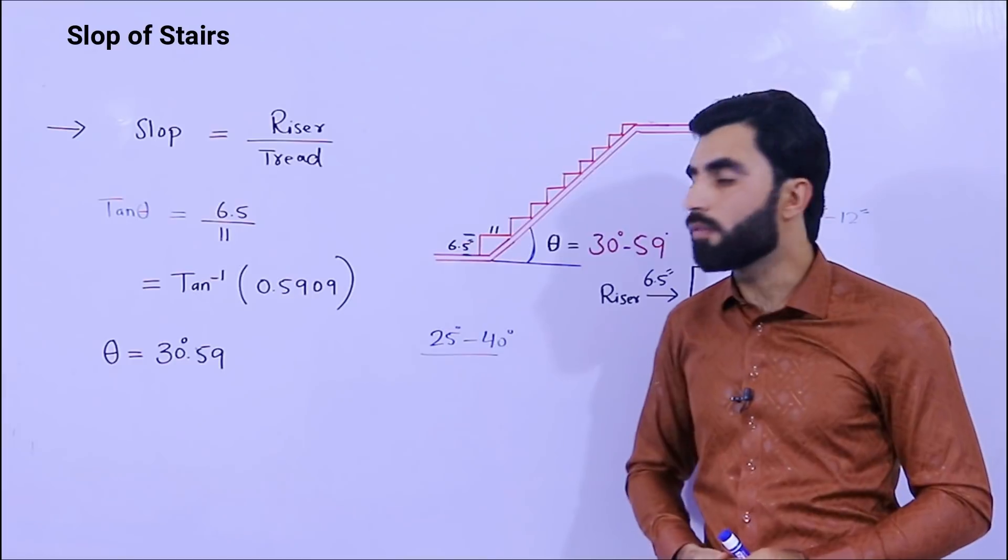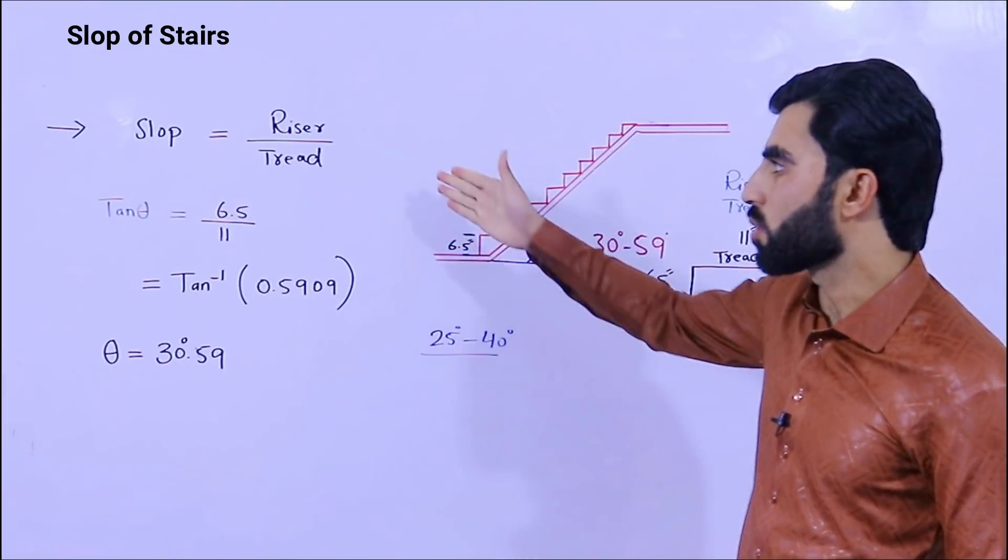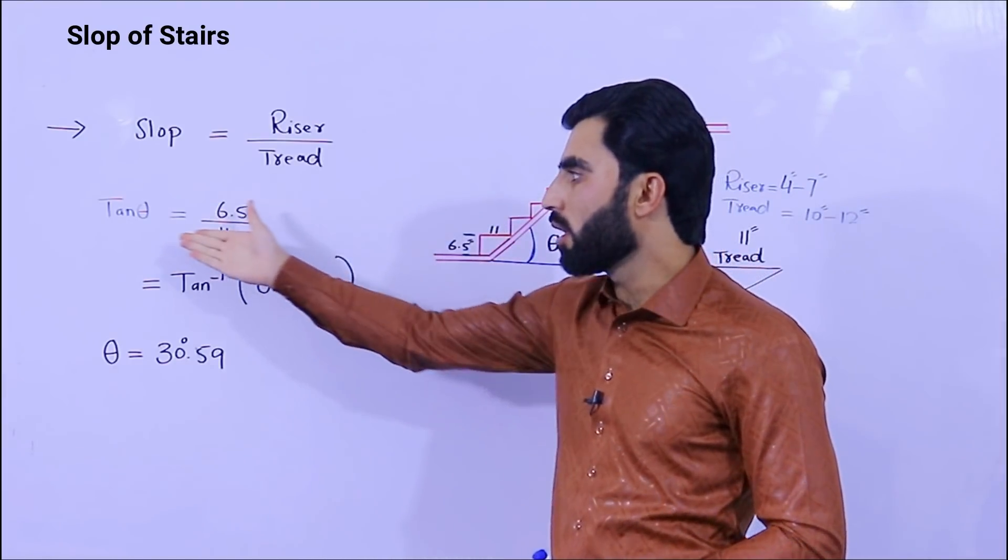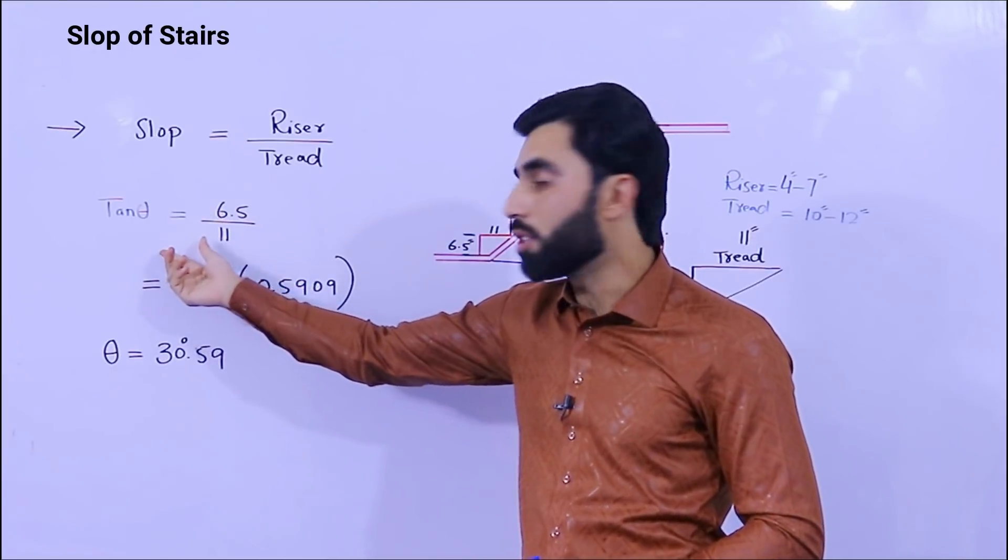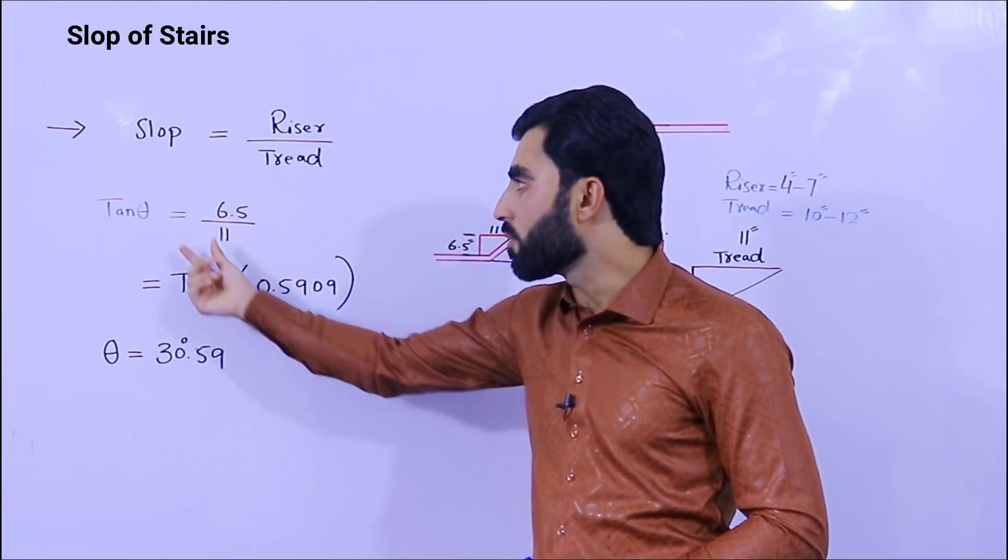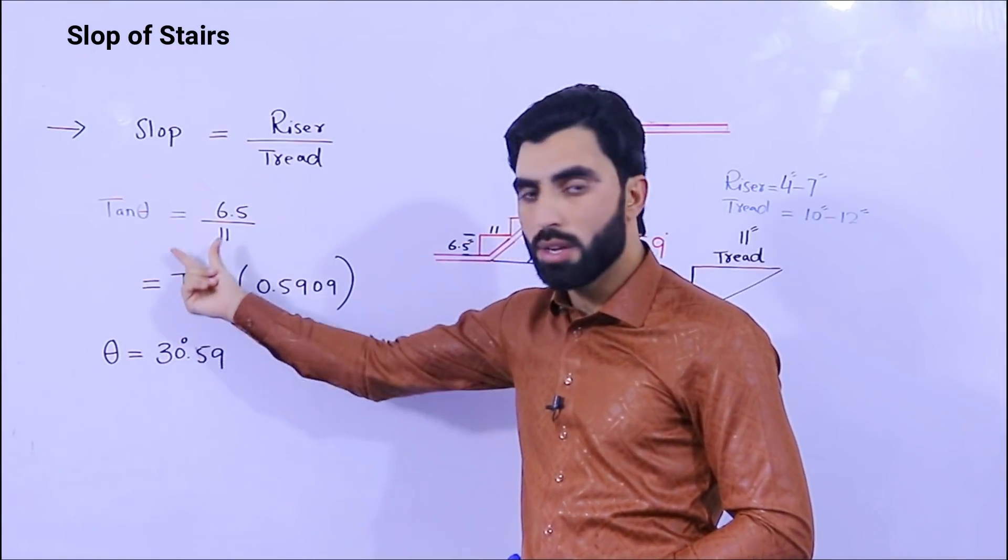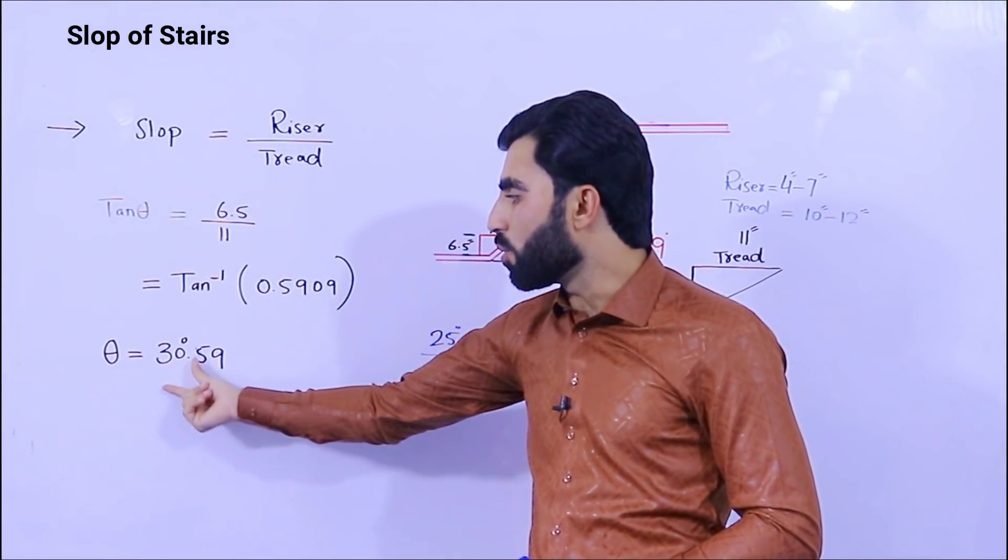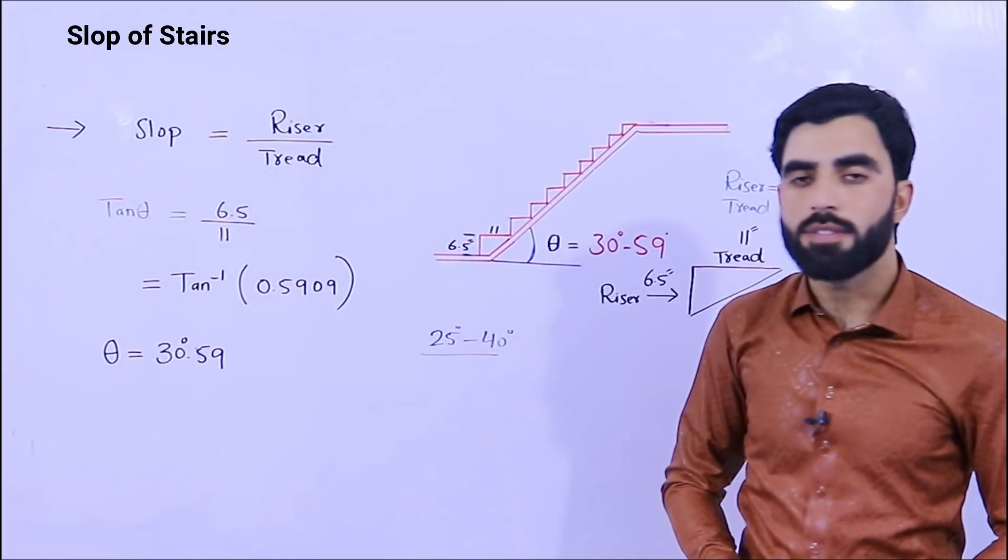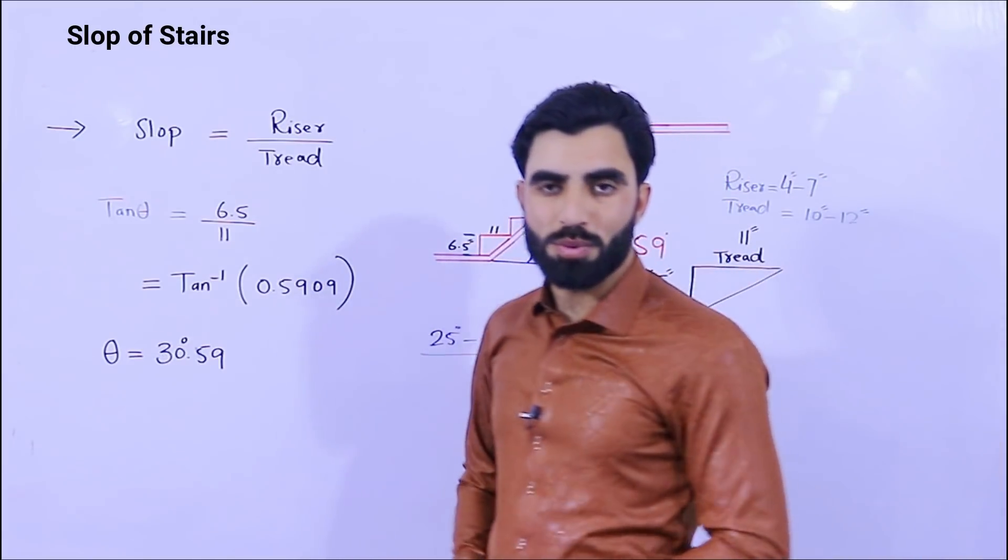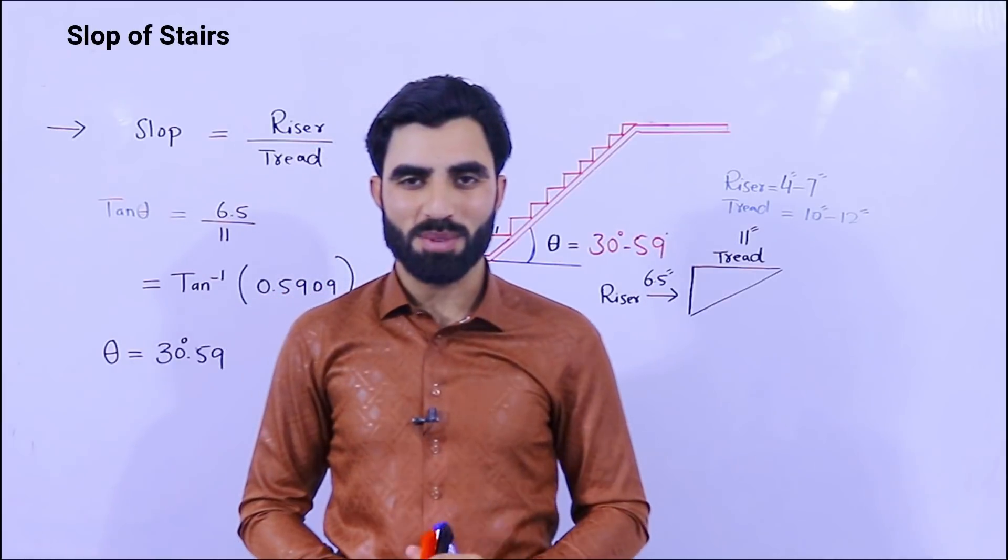So guys, this is a short video which I have discussed in front of you, how to find slope of staircase. Slope equals riser divided by tread. Then as you know, the slope is tangent theta. When you do calculation for this you will get the value, then tangent inverse, then you will get the value 30.59 degrees. Hope this video can help you. Thanks for watching, see you in next video, goodbye.